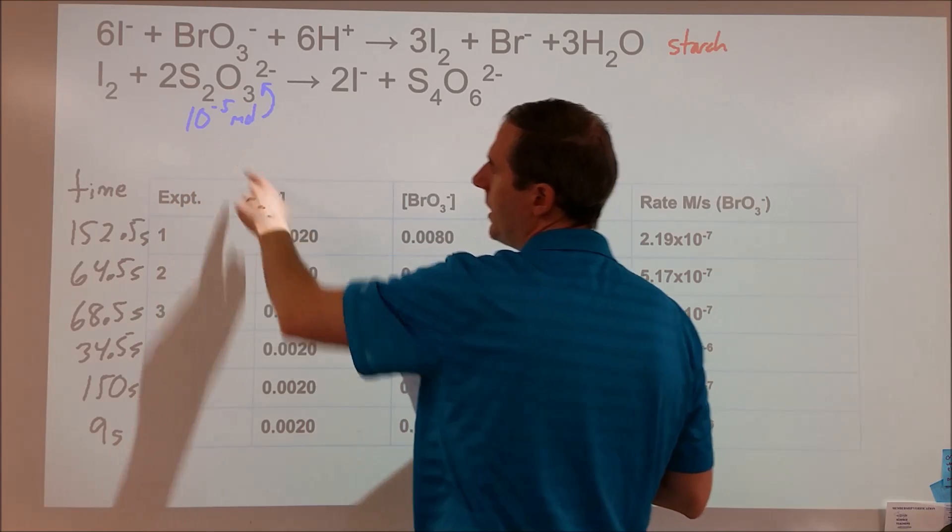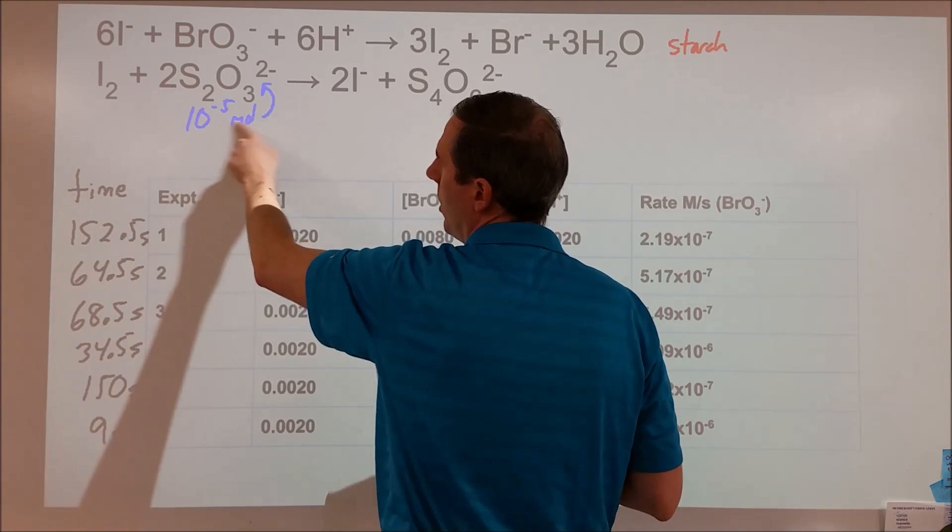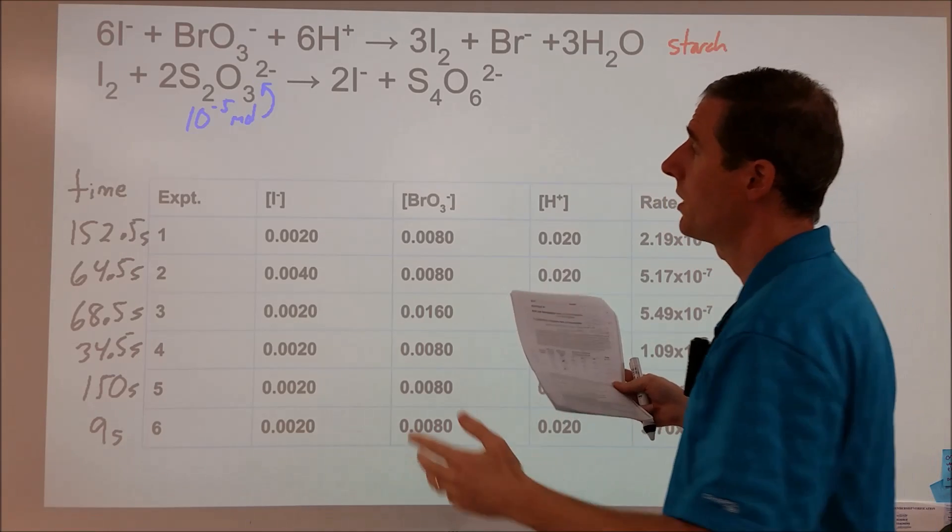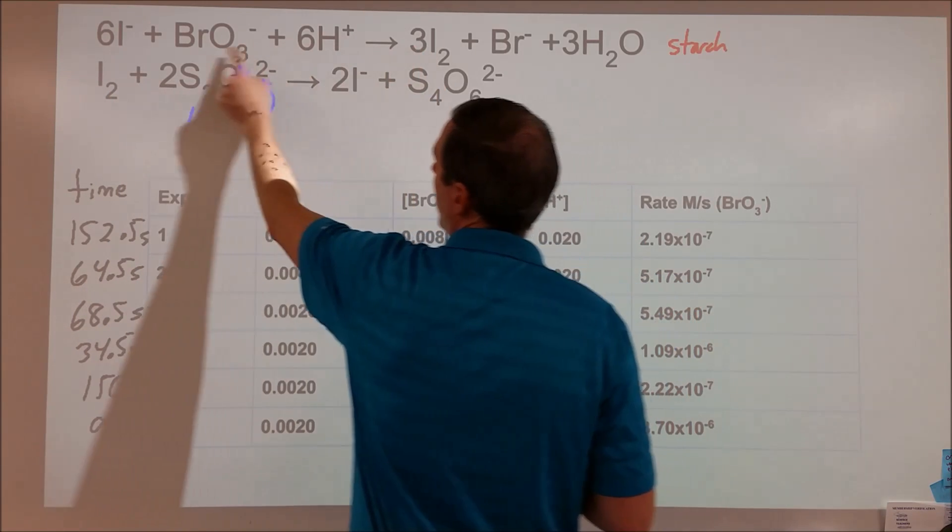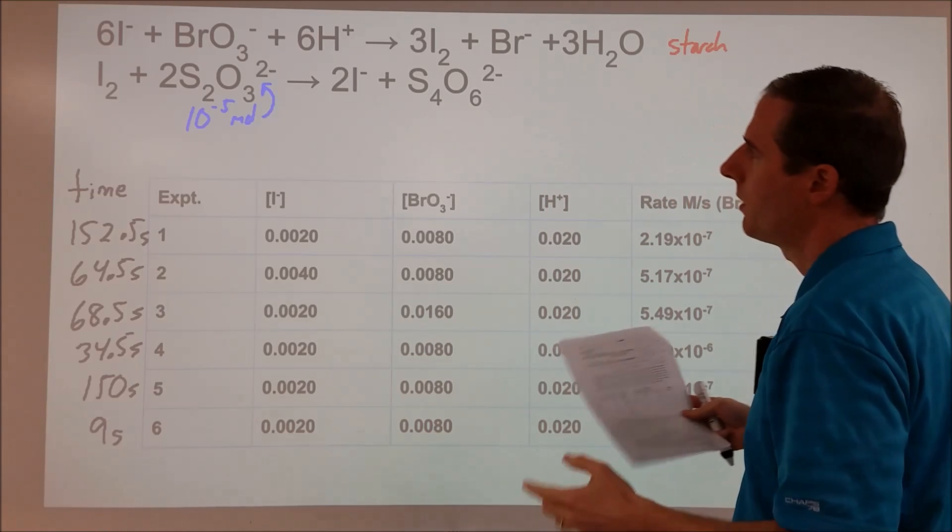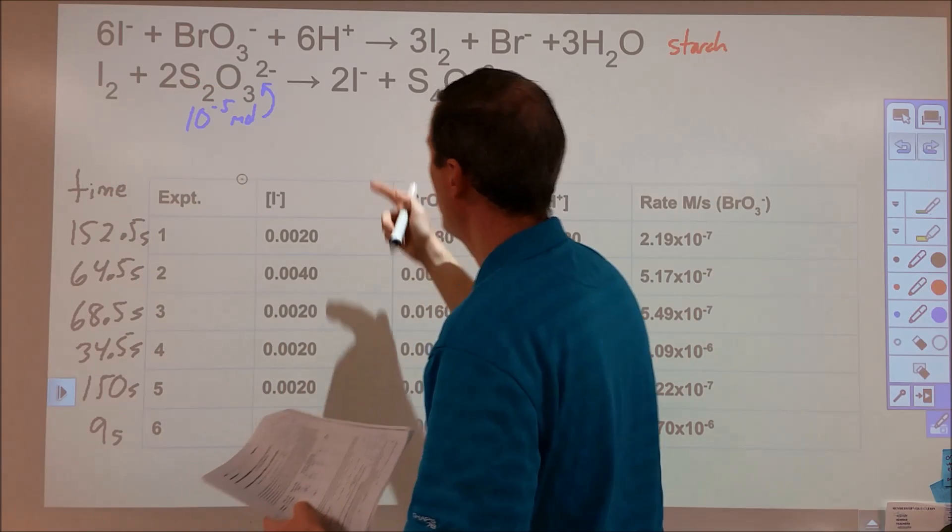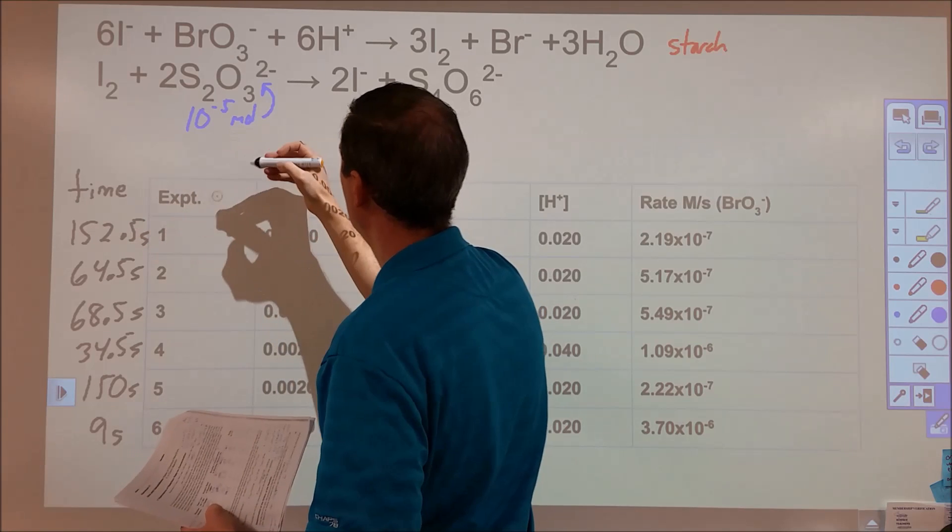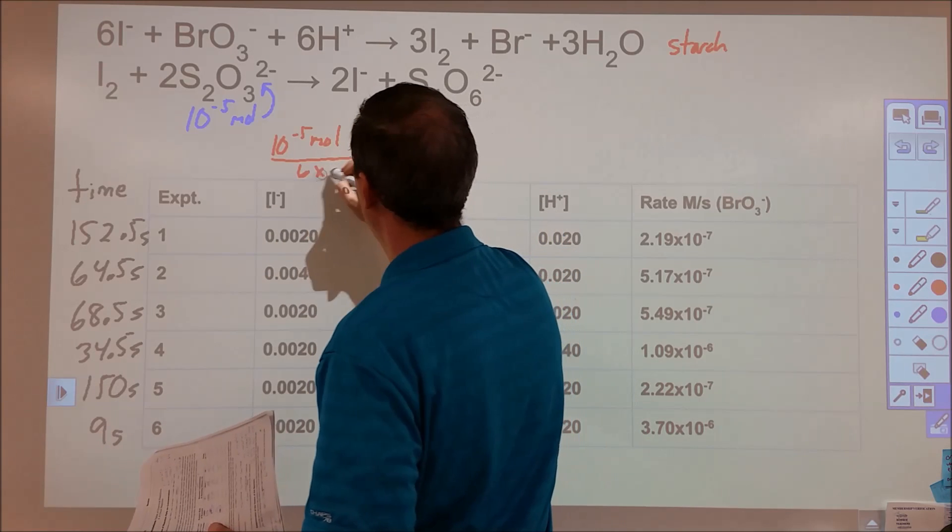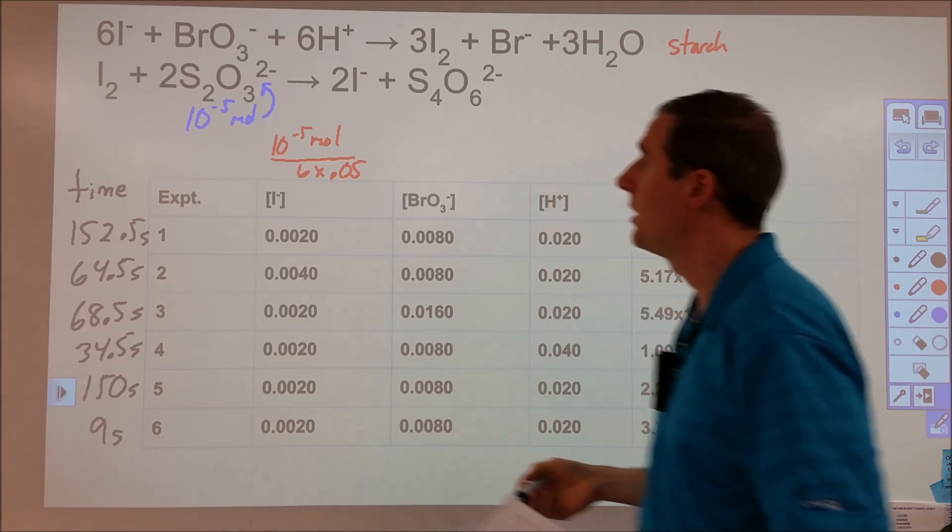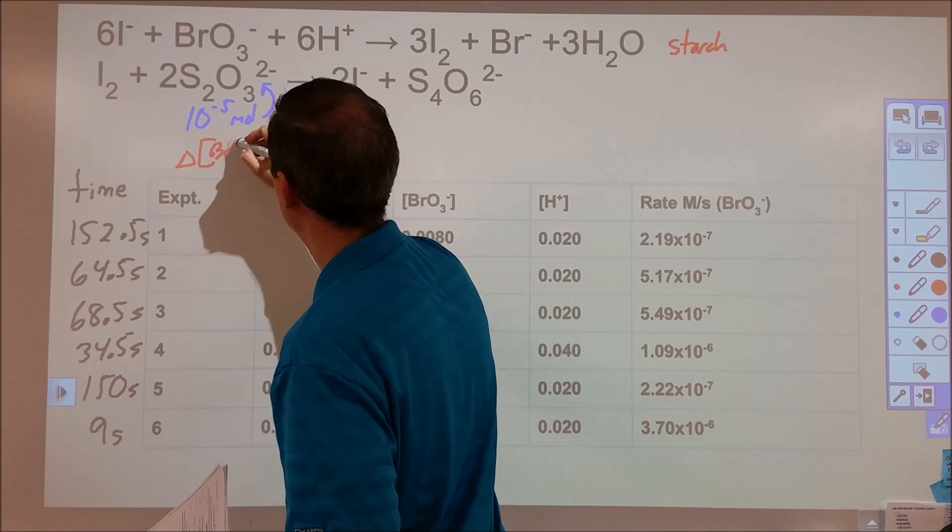So the starting amount of thiosulfate is 10 to the negative fifth moles. So if you track through, it turns out that you need six moles of this to react with all, or six times as many, or I'm sorry, one-sixth the amount of moles of this to react with all of this, because one of these reacts with two of those, and three of those get produced from every one of those. So what we can effectively figure out is, how much bromate do we need to react before we'll get to the point where this has run out? And so, if we do that, we end up dividing this by six. So we take our 10 to the negative fifth moles over six. But then we also have to divide it by the volume to get it into a concentration mode. Because effectively, what we're looking for is, what is the change in concentration of my bromate?